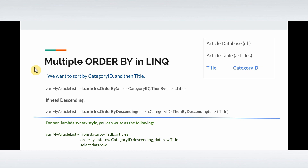We create a variable and use OrderBy first, setting it to category ID, then use the ThenBy keyword to sort by title.